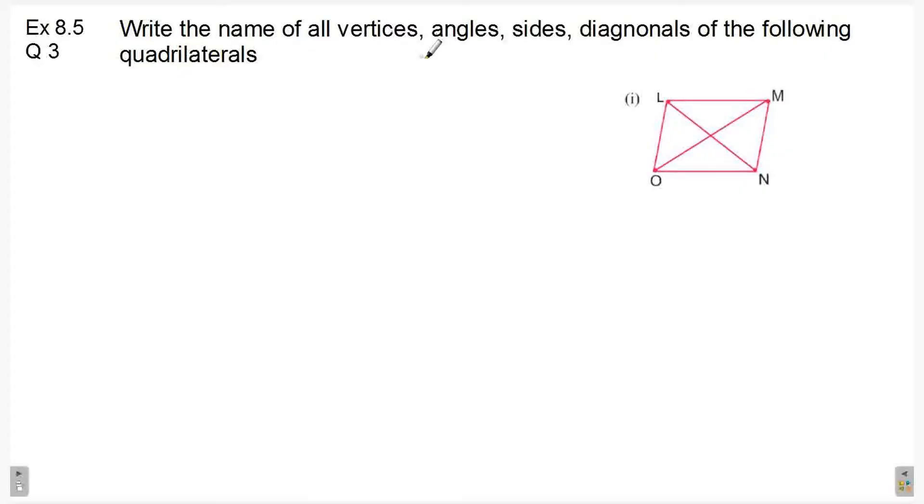Write the name of all vertices, angles, sides, diagonals of the following quadrilateral. Now, this is the given quadrilateral, LMNO.